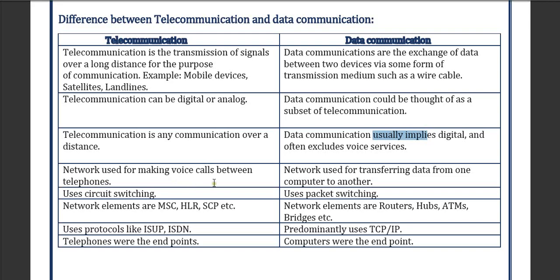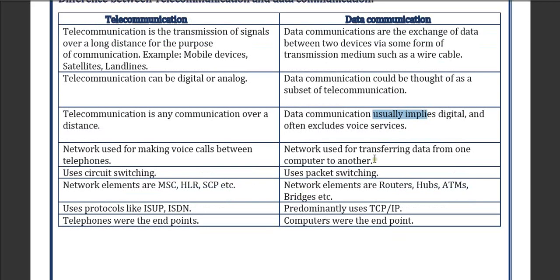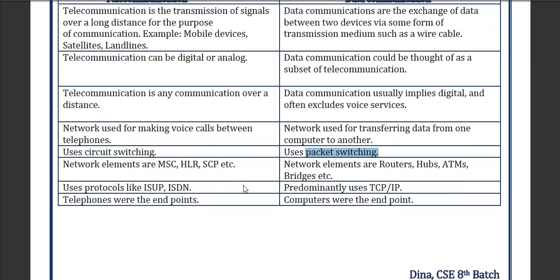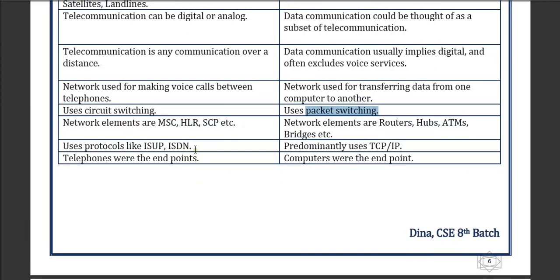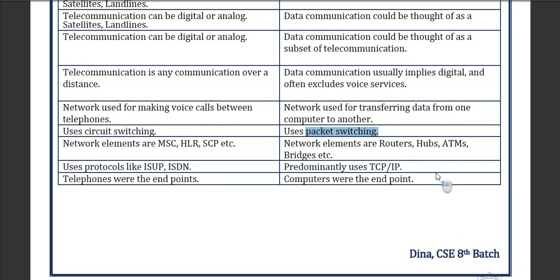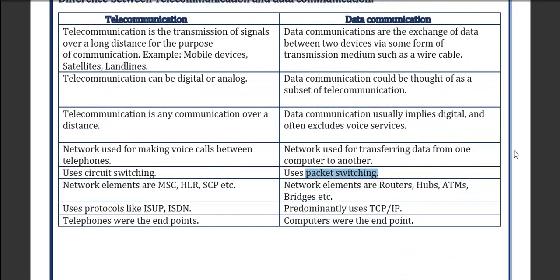Telecommunication networks are used for making voice calls between telephones, while data communication networks are used to send and receive data. In telecommunication, circuit switching is used, but in data communication, packet switching is used. Network elements in telecommunication include HLC, SPC, etc., while data communication uses routers, hubs, and bridges. Protocols in telecommunication include ISDN, whereas data communication uses TCP/IP. Telephones are the endpoints in telecommunication, but computers are the endpoints in data communication.